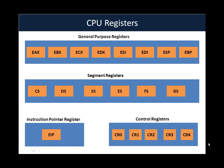Very broadly there are four kinds of CPU registers. The first is the general purpose registers. There are approximately eight: EAX, EBX, ECX, EDX, ESI, EDI, ESP, and EBP. These are generally used during various calculations which happen inside the CPU. We will dive into more detail about these registers in the next slide.